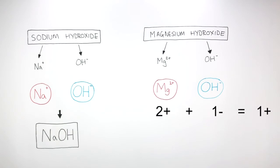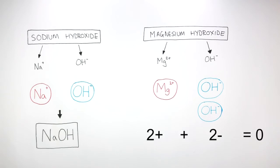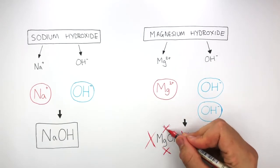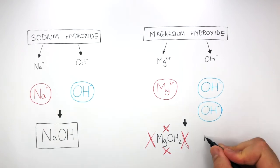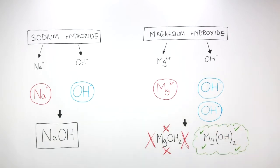2+ and 1- overall still has a charge of 1+. Therefore, 2 hydroxide ions are needed so that a charge of 2- from the 2 hydroxide ions can cancel out the charge of 2+ from the magnesium ion, giving an overall charge of 0. When writing the formula, we do not write MgOH2 — this is wrong, as it suggests one oxygen and two hydrogen atoms. The correct formula is Mg(OH)2, with OH in brackets and a small 2 outside, indicating two hydroxide ions.